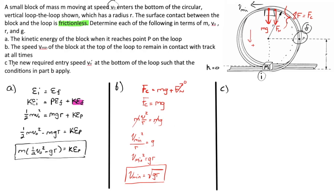In part C, you were asked, what is the new required entry speed, V0 prime, at the bottom of the loop such that the conditions in part B apply? So how much speed do you need at the beginning to make sure you have exactly the right minimum speed at the top? For that, let's go back to conservation of energy, but let's rename our final point. This time our final point is all the way at the top. And let's consider our energies.